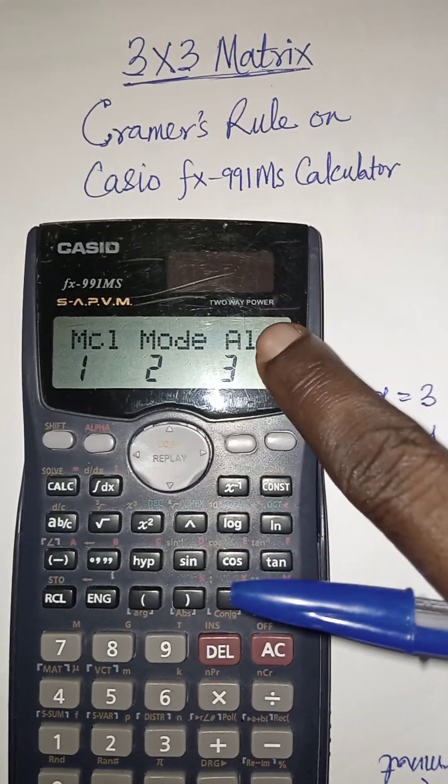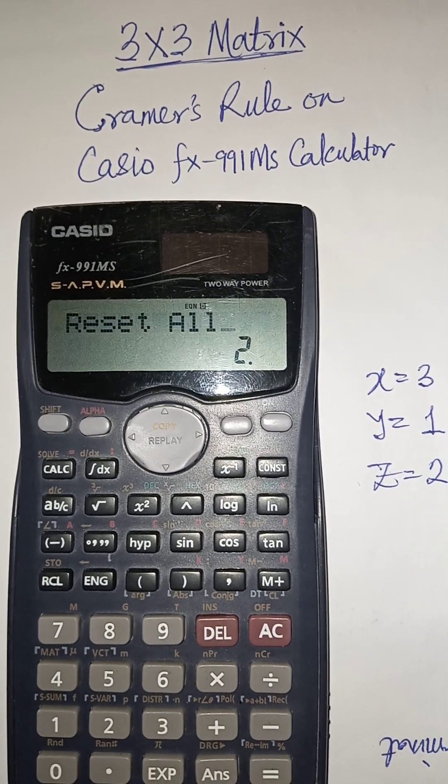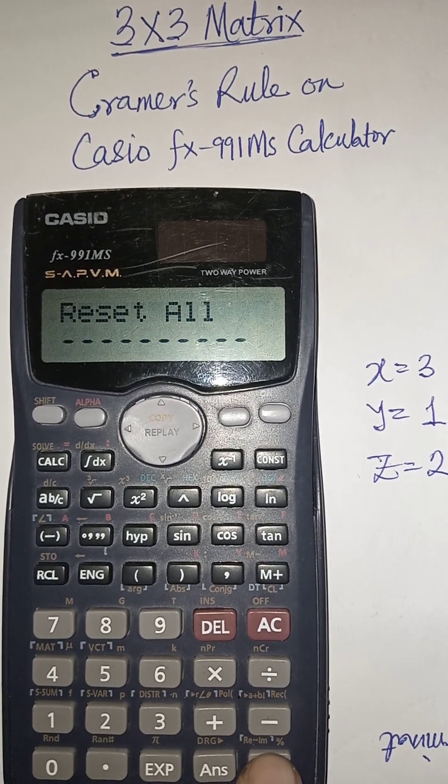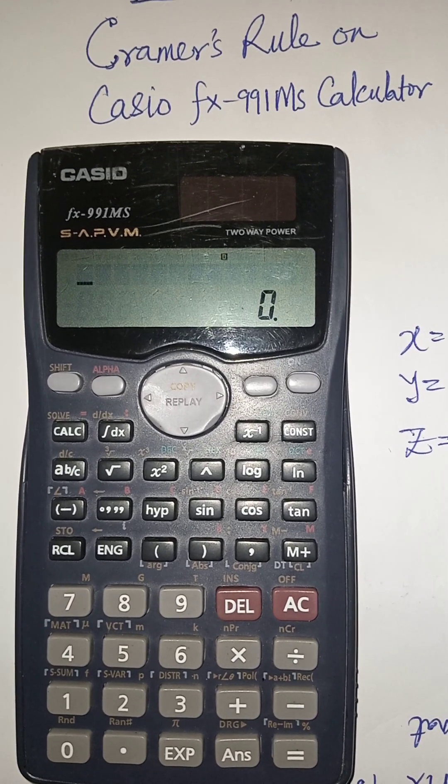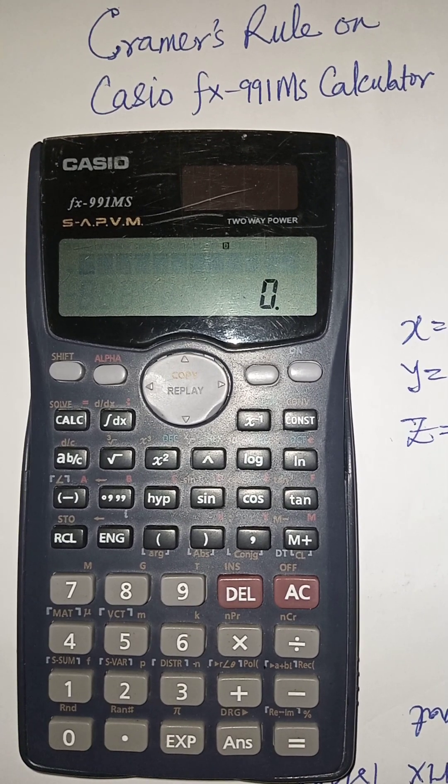Then you have 'all' under it which is 3. Press 3 and press equal to 2 times to reset your calculator. Your calculator is fine and you can use it. Thank you very much for watching. See you in the next video. Bye!